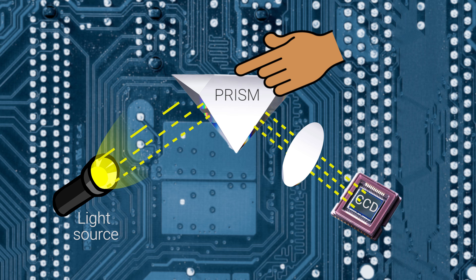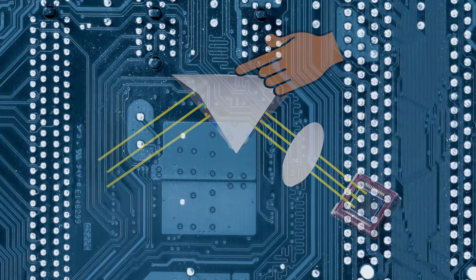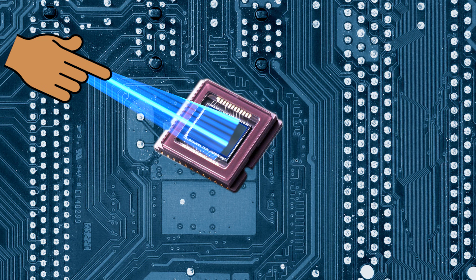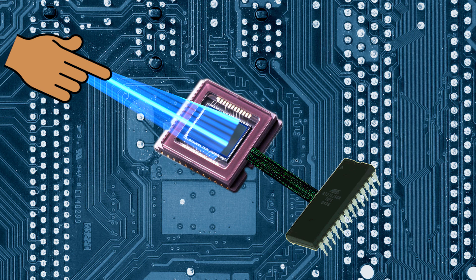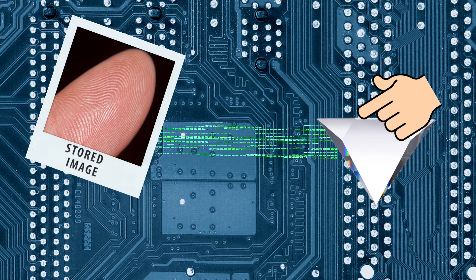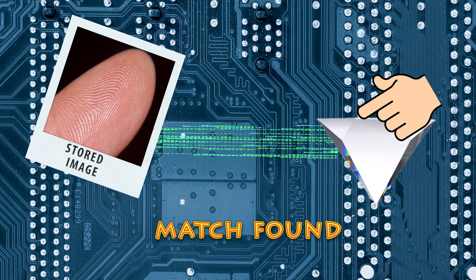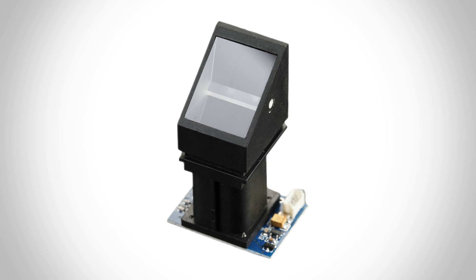The CCD is an electronic component with a photosensitive layer on top of it, and under that you have an array of capacitors. Once you place your finger on an optical fingerprint scanner, the light source shines through the prism, which reflects that fingerprint image through the lens into the CCD. The photosensitive layer of the charged coupled device captures it as an image, and the image of your fingerprint is stored inside the scanner's memory. Every time you place your finger on that scanner, highly complex image recognition and matching algorithms match your fingerprint with the stored image, and based on that comparison you are authenticated.